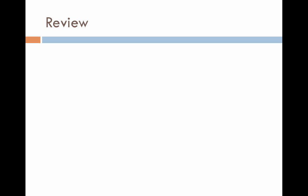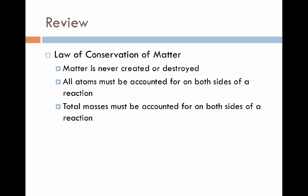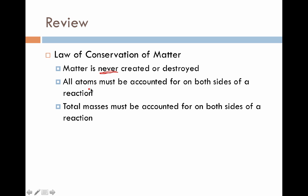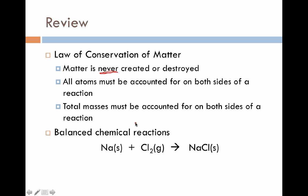We'll begin with a quick review of some ideas you should already be fairly comfortable with. The first is the law of conservation of matter: matter is never created or destroyed. All atoms must be accounted for on both sides of a chemical reaction — the type of atom and the quantity — and the total masses must also be accounted for on both sides of a chemical reaction.